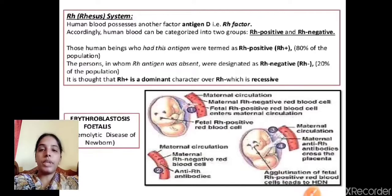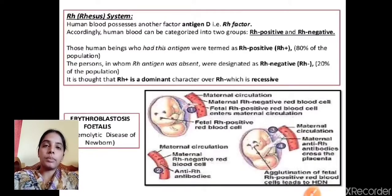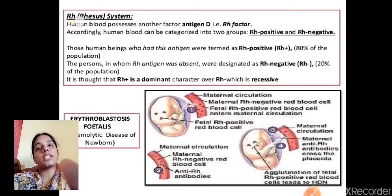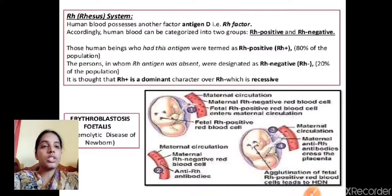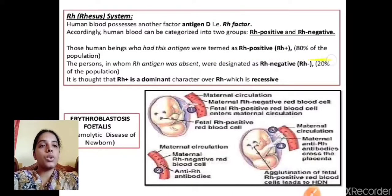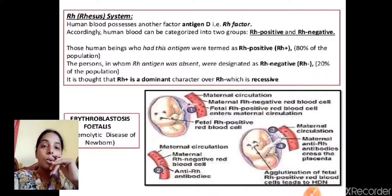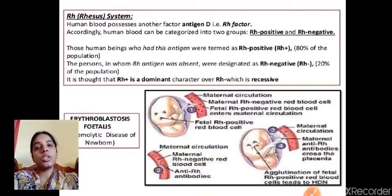Regarding the Rh factor: human blood possesses another antigen called antigen D, known as the Rh factor. Accordingly, human blood is categorized into Rh positive (having the Rh antigen) and Rh negative (not having the Rh antigen). Rh positive is the dominant character and Rh negative is recessive.